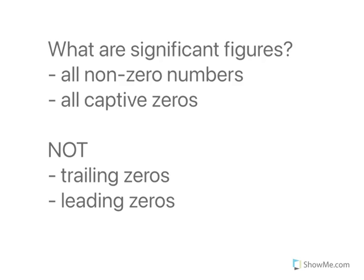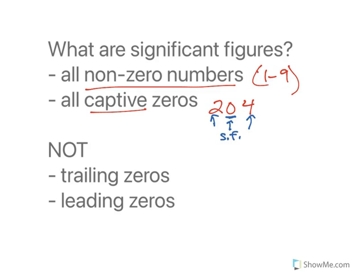Now, what are significant figures? Like, are all numbers significant? And the answer to that is no. So all non-zero numbers, right? So 1 through 9. Anytime you see 1 through 9, those are going to be significant. And what we call captive zeros. So if I would have like 204, this is a captive zero because it is between two non-zero numbers. So therefore, this is a significant figure.